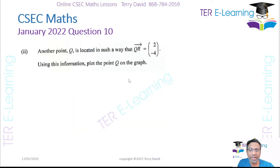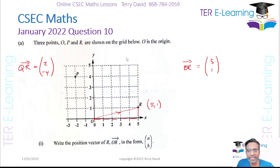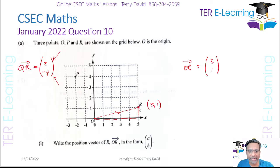Another point Q is located such that QR = (2, -4). Use this information to plot where Q is. So QR is (2, -4). We need to figure out where Q is. In order to move from Q to R we would have had to go two units to the right and four units down.